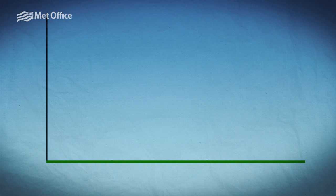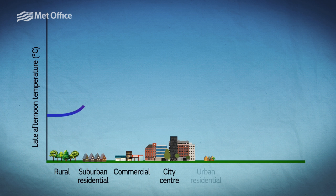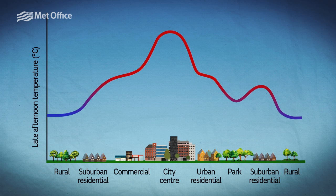The urban heat island effect will have a great influence on snow amounts falling across a wide area, as can be seen from the diagram. From our knowledge about the freezing level, we can see that any snow falling over the city center will be falling through warmer air for longer than snow falling over the rural area. Therefore snow is less likely in the city center.